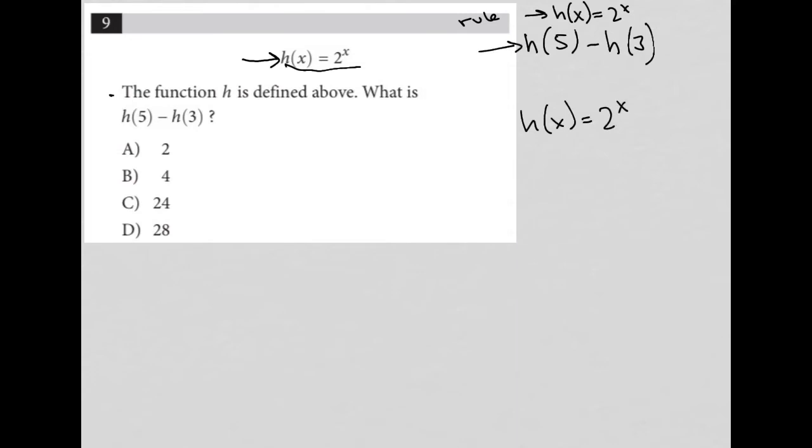If we're figuring out what is h(5), all we're doing is saying if I replaced x with 5 inside the parentheses, that means I must also replace this x here with 5. So h(5) = 2^5, which you can throw into your calculator, and that answer would be 32.